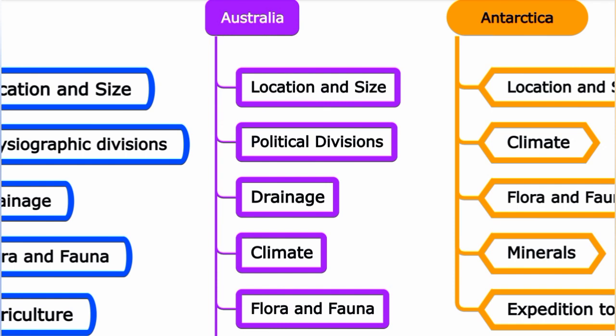Australia has 3 major physical divisions: the Great Western Plateau, Central Lowlands, and Eastern Highlands. The drainage system is led by the River Murray, the longest river in Australia. The climate features heavy rainfall in certain regions.